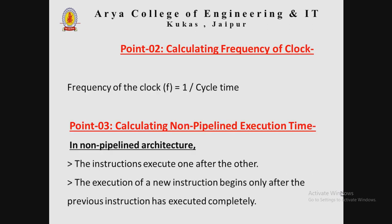The second step is calculating the frequency of the clock. The frequency of the clock, denoted by F, equals one divided by the cycle time.